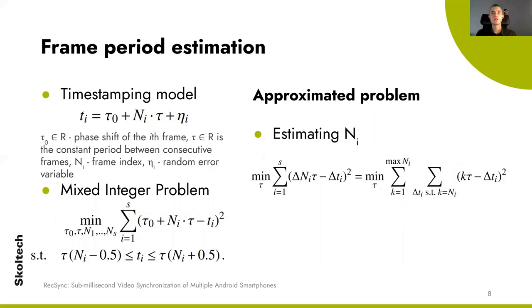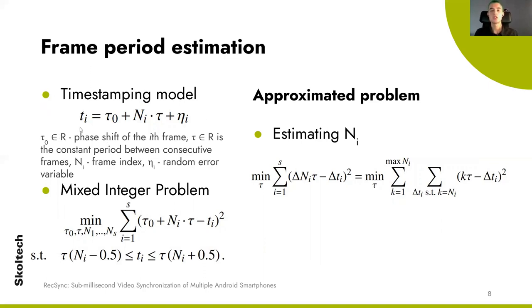We proposed the following model of frame timestamps, which accounts for the outliers and random noise. It should be noted that by not discarding the outliers close to the multiple of the period, we can achieve better accuracy.